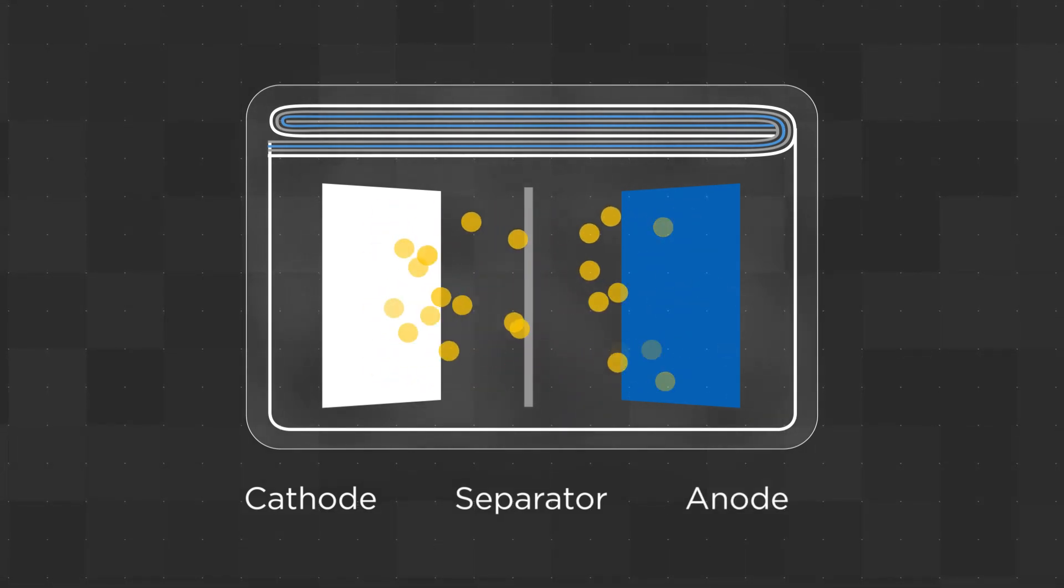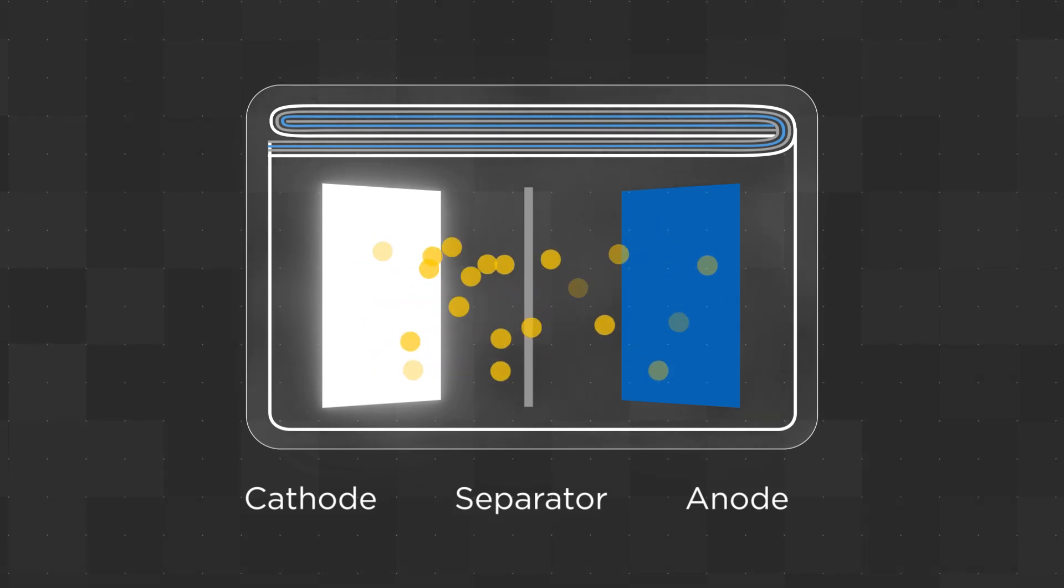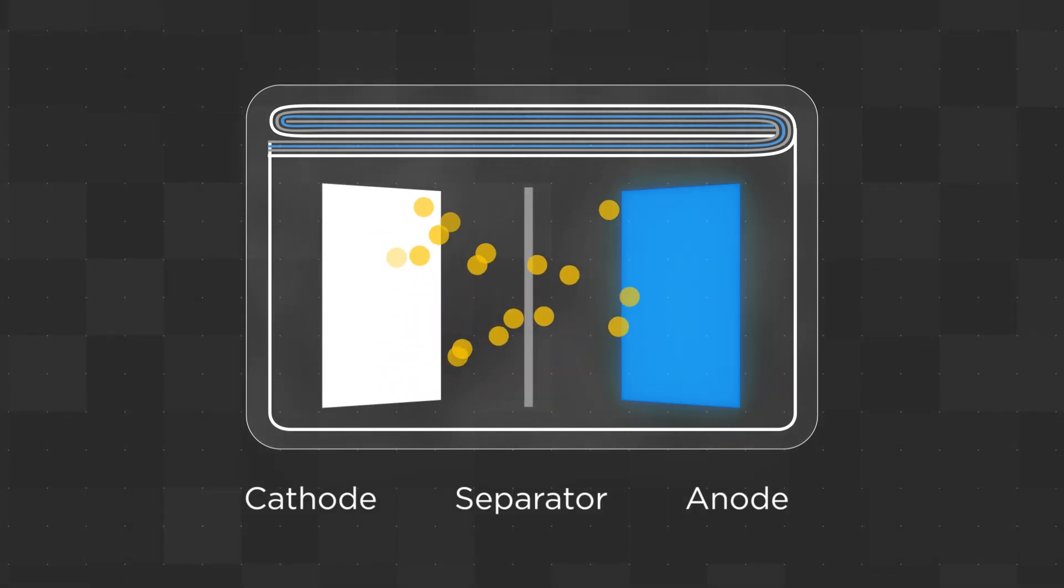During charging, the lithium ions move from cathode, the positive electrode, flow through tiny holes in the separator, and into the anode, the negative electrode. This process is reversed when the cell is discharged.